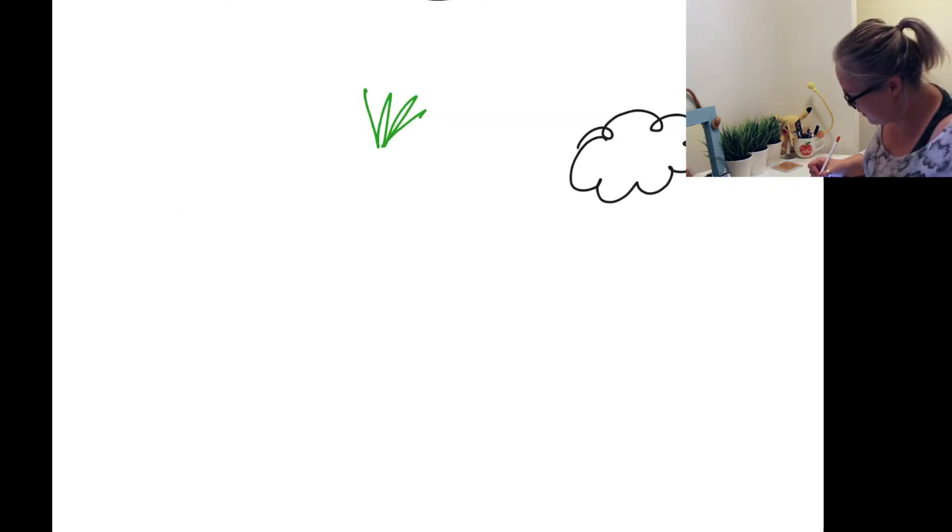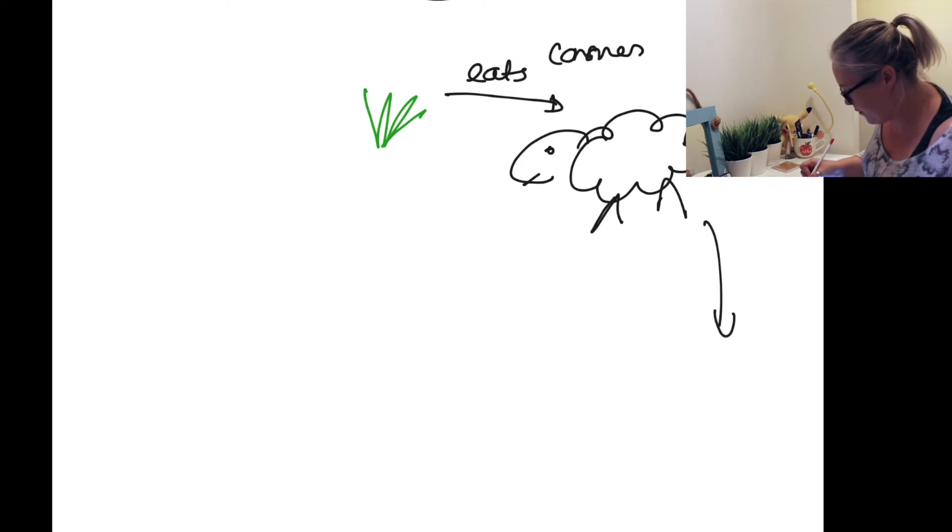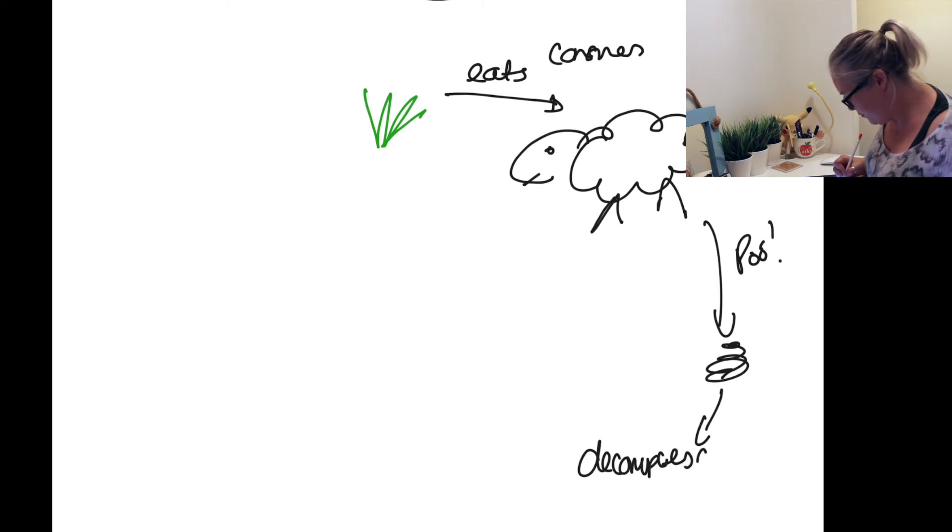So here we've got our sheep. There's my little sheep, and our sheep eats our grass, it consumes it. But our sheep will also, don't forget, it will do poo. And that poo will be decomposed by microorganisms called decomposers.